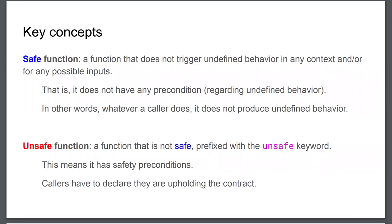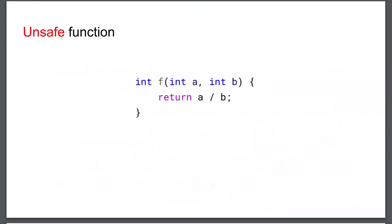Another way to put it is in terms of safety contracts or preconditions. A safe function does not have a safety contract — which may sound counterintuitive — meaning the caller doesn't have to do anything particular; it can pass whatever values it wants and the function will not trigger undefined behavior. Unsafe functions are the opposite: they require the caller to pass correct values meeting the specified contract.